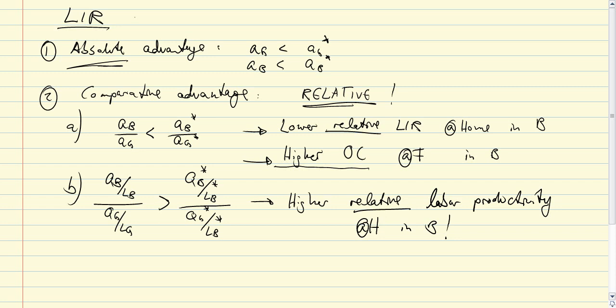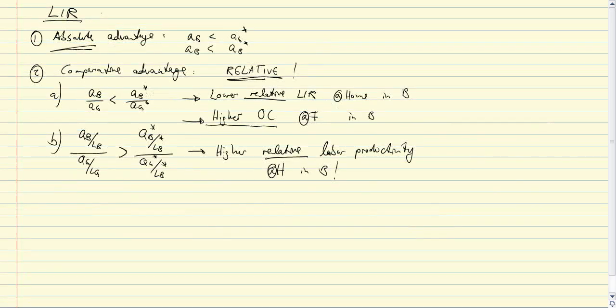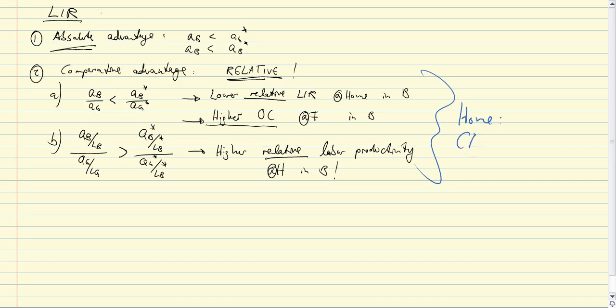So all of this together makes it quite clear that the home country has the comparative advantage in butter. Now if we just were to read this argument just in reverse, it would tell us simply the reverse, namely that a foreign country has the comparative advantage in guns.